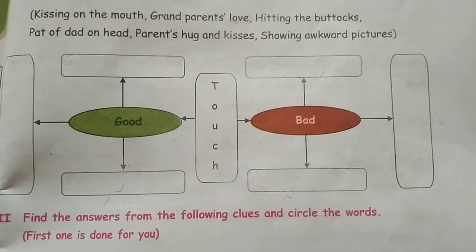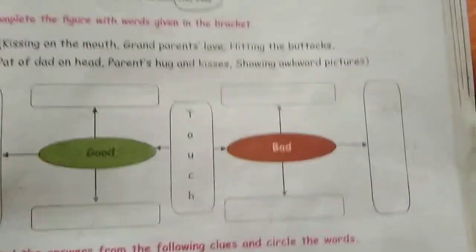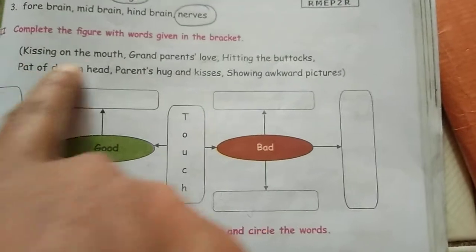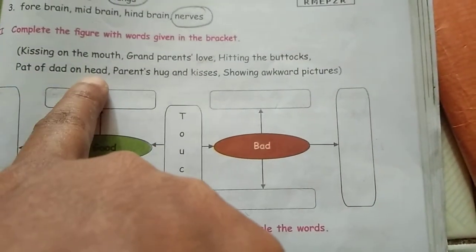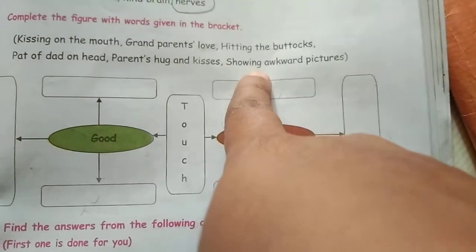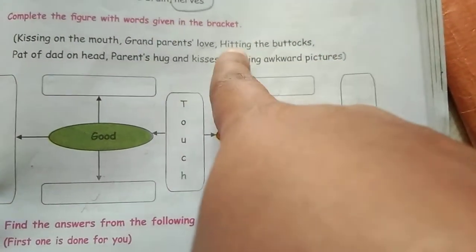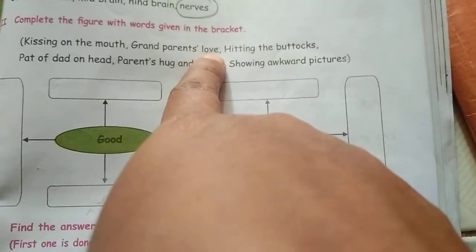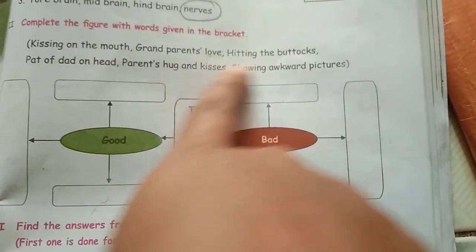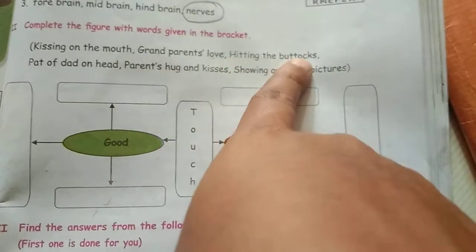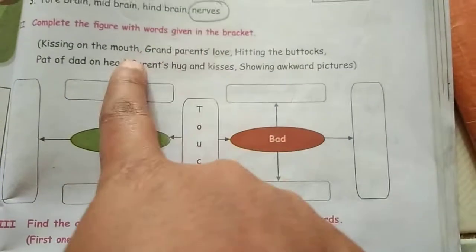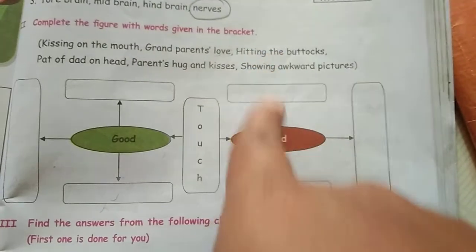Closely watch this activity. Above there is: a pat of a dad on head, parents hug and kisses, showing awkward pictures, hitting the buttocks, grandparents love, kissing on the mouth. So you all should be able to understand what each of these is. Write whatever comes under good touch and whatever comes under bad touch.